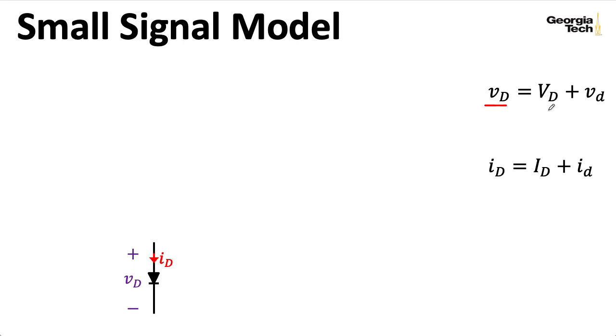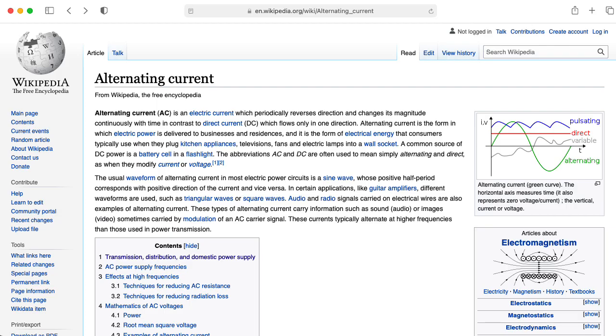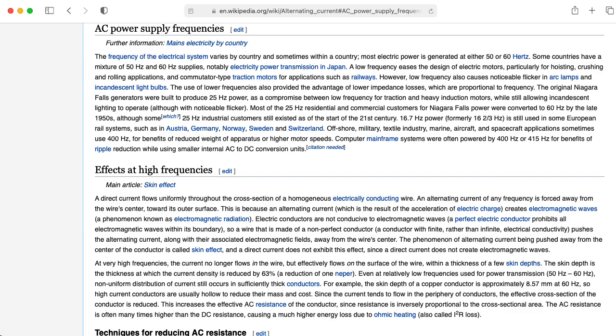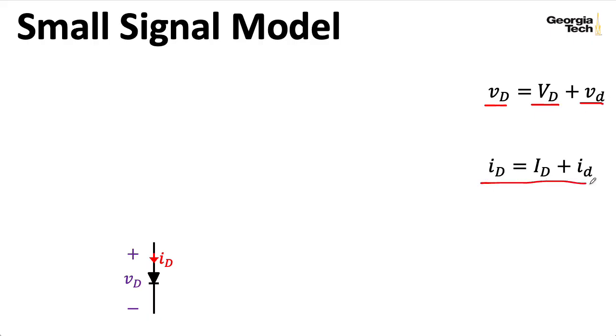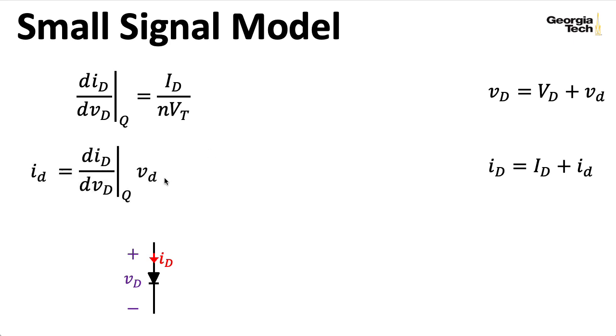Our total voltage is the DC voltage, the quiescent voltage, plus our small signal voltage. People will often call this the AC voltage, although that makes you think about your AC wall current. So I prefer to use the term small signal, and you have a similar setup for your current. So here's that slope that we computed on the previous slide. And we can think about this as like a first-order Taylor series expansion. So we'll say that the change in current is equal to the change in voltage times this slope.